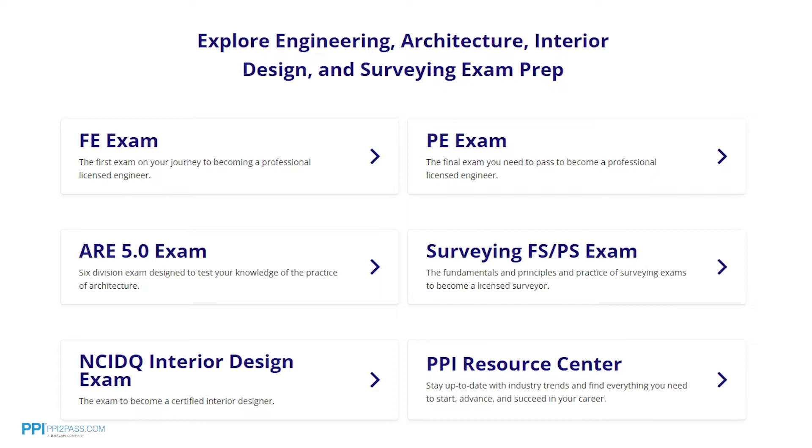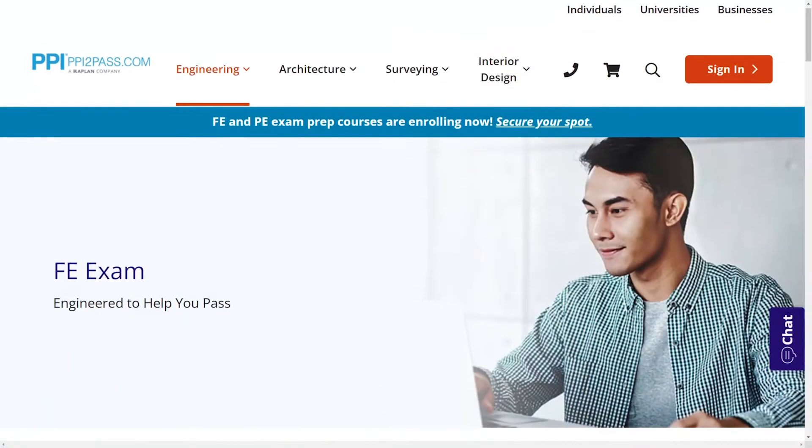PPI's live online courses include hours of lectures, problem-solving demonstrations, exam strategy sessions, office hours, and a passing guarantee. When you take a live online course, PPI guarantees you will pass or you can take the on-demand course for free.